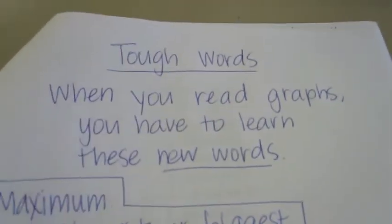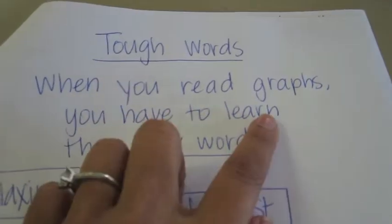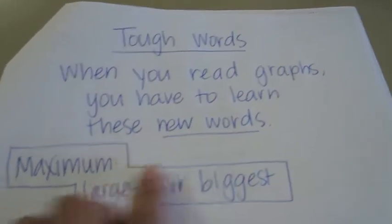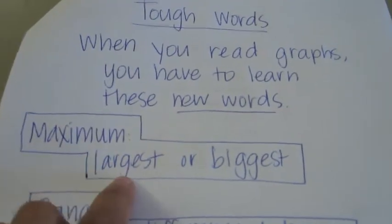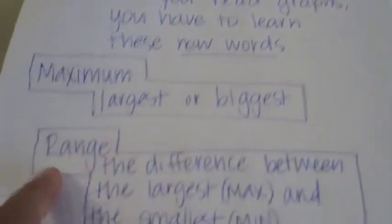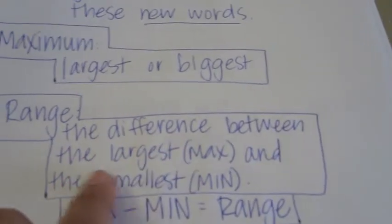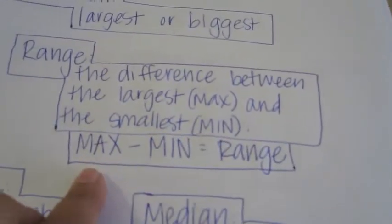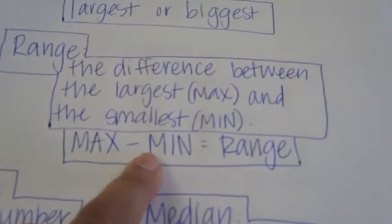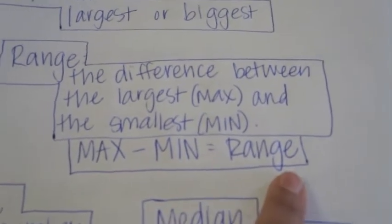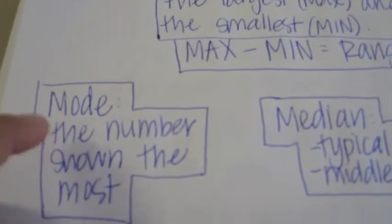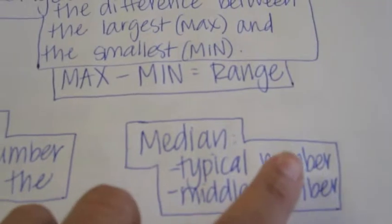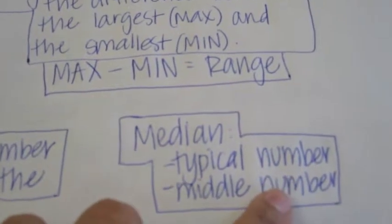Here are some tough words to go over when you read graphs. Maximum means largest or biggest. Range is the difference between the largest (max) and the smallest (min) — take the maximum minus the minimum and you get the range. Mode is the number shown the most. Median is the typical or middle number.